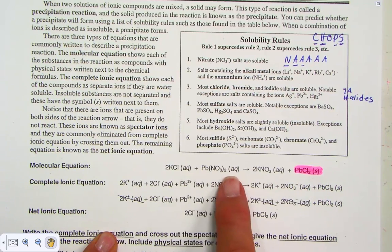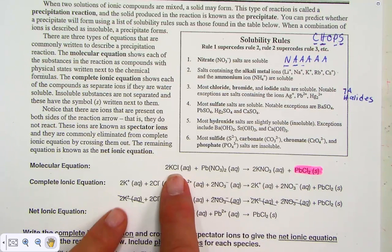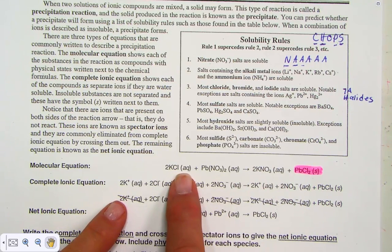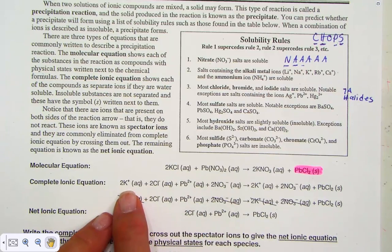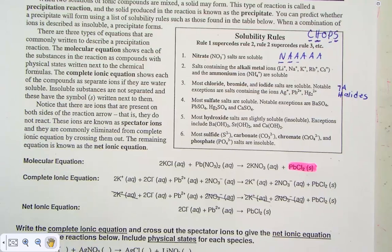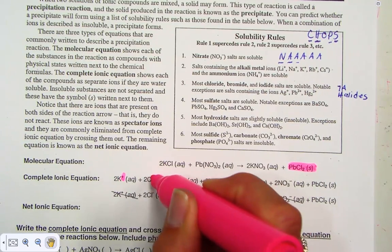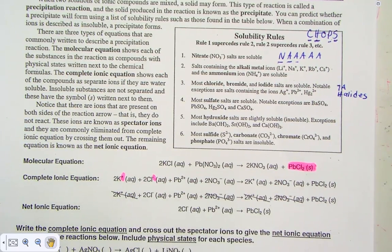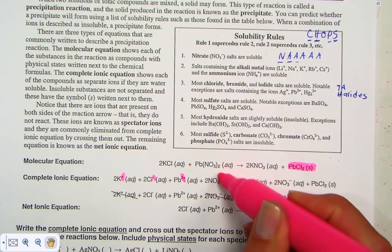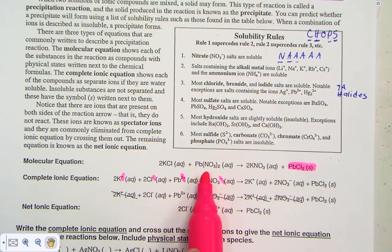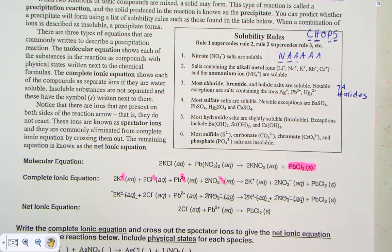Everything that has the AQ adjective gets dissociated. Two KCl's aqueous is now written as two potassium ions, two chloride ions, both aqueous. Notice the charge is present. A lead ion and two units of nitrate ion is the dissociated form of lead 2 nitrate.